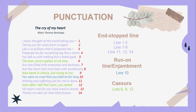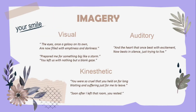Now let's go to the imagery used in the poem. We can find three types of imagery: visual, auditory, and kinesthetic. For visual imagery, we have: 'The eyes, once a galaxy on its own, are now filled with emptiness and darkness,' and 'prepared me for something big like a storm,' and 'you left us with nothing but a blank gaze.' For auditory imagery, we have: 'And the heart that once beat with excitement, now beats in silence, just trying to live' — it gives us a beating sound of the heart.